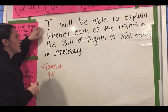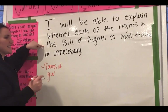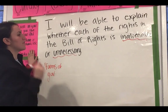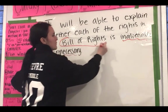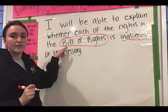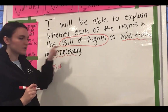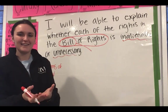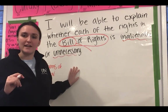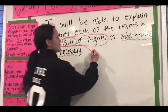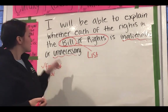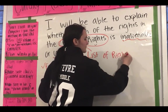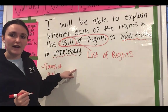The learning target is: I will be able to explain whether each of the rights in the Bill of Rights is inalienable or unnecessary. Let's break down some of these terms first. Today we're talking about something really important called the Bill of Rights. We can break this term down into smaller parts. First, you see the word 'bill' — usually when we think of bill, we think of something we have to pay, but in this case the Bill of Rights has nothing to do with money.